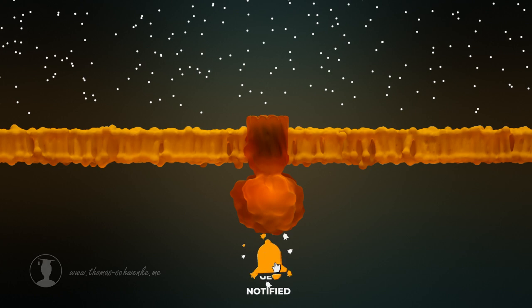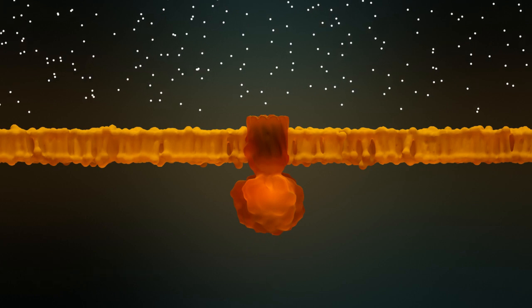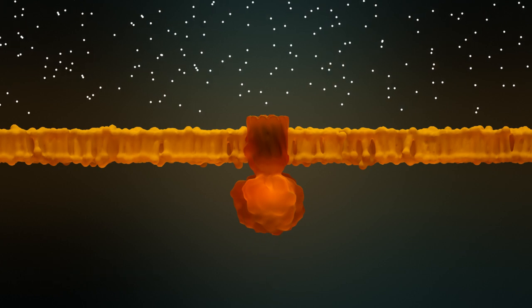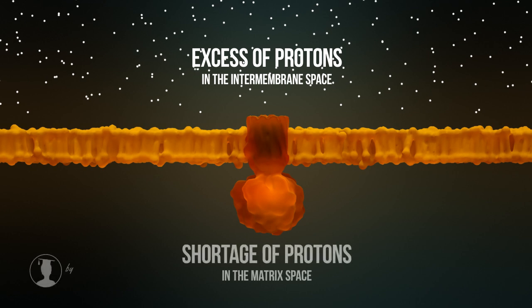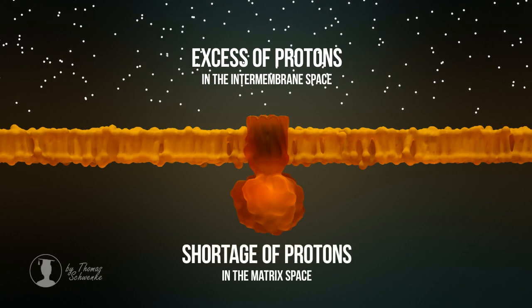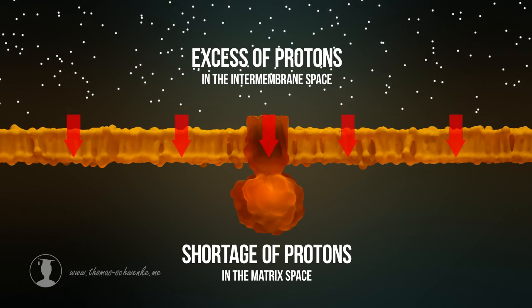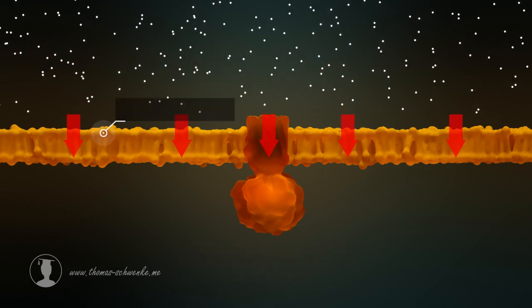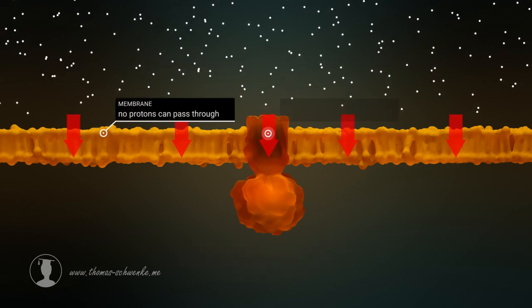Pumping the protons into the intermembrane space creates a difference in the concentration of protons. There are many protons on one side and only some on the other. In order to establish an equilibrium, the protons try to move to the other side, but can only cross the membrane via the fifth complex.